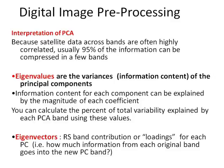Principal component transformations make pretty maps and pretty coverages, but we still have to be able to interpret them. We first need to know how much of the variability in our original image, using all of the bands, we're able to account for using this smaller number of PCA bands. We can get that from something called the eigenvalues. When we do a principal components transform, there'll be a new eigenvalue file created that tells us how much of the total spectral variability is contained in each band. We can use these eigenvalues to figure out how many bands we have to retain for our analyses.